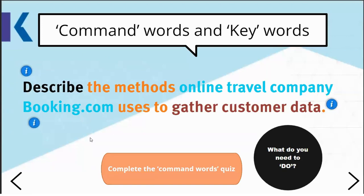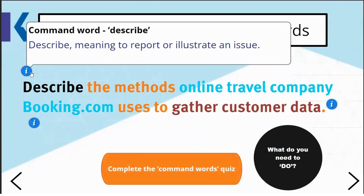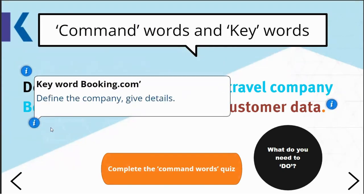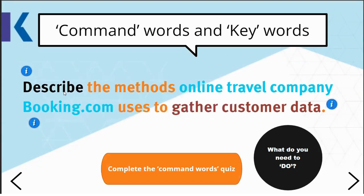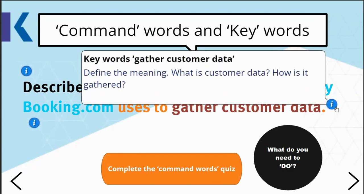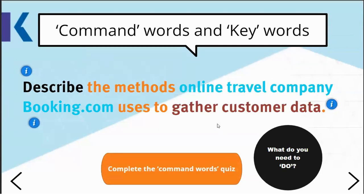Here I've broken down one section of the assignment question: 'Describe the methods online travel company Booking.com uses to gather data.' The command word is describe — meaning to report or illustrate something. The keyword is Booking.com, so I know I'm being asked to look at Booking.com as a case study. I also want to focus on what it actually means to gather customer data and define terms — what do they mean by customer data, and what are the methods by which it is gathered?